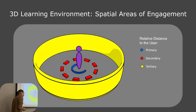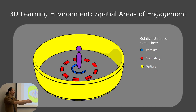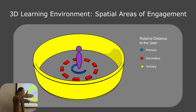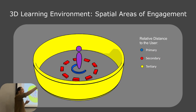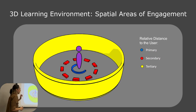Regarding the environment — and this is my architecture brain speaking — it comes down to three areas of engagement based on distance. The primary area is whatever is right in front of the user. Then there's a secondary area further away, and a tertiary area — things within eye distance, like signage. When we go to the airport, there's a lot of signage creating areas of engagement. I'm talking about how you can use those same principles in a learning environment.